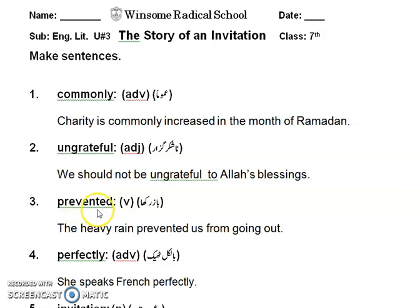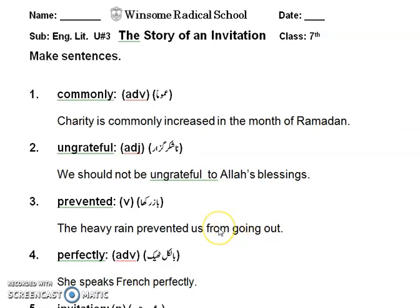Number 3 is 'prevented'. Prevented is a verb in part of speech and its Urdu meaning is 'baaz rakna'. Because the word is past tense, its Urdu meaning is 'baaz rakha'. The sentence is: The heavy rain prevented us from going out. Urdu: Tez barish, mooslaadar barish ne hamein bahir jane se baaz rakha.